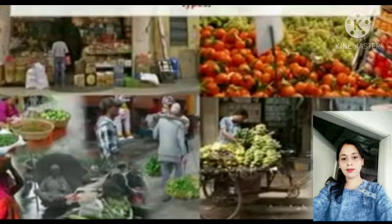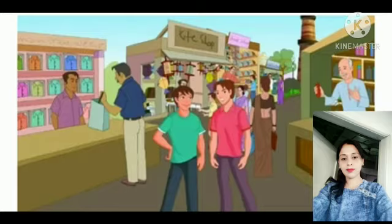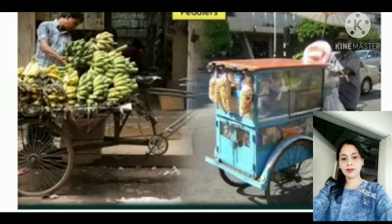There are two types of trade: visible trade and invisible trade. What is visible trade? Buying and selling of goods. What is invisible trade? Buying and selling of services is called invisible trade.